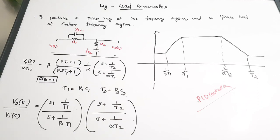In this video we discussed the lag compensator, lead compensator, and lag-lead compensator — their circuits, diagrams, Bode plots, and transfer functions. We use lag compensators to produce a phase lag, lead compensators to produce a phase lead, and lag-lead compensators when you need both effects at different frequency regions. I hope you understood the concepts. If you found it useful please give it a thumbs up, share with your friends, and subscribe to the channel. Thanks for watching!